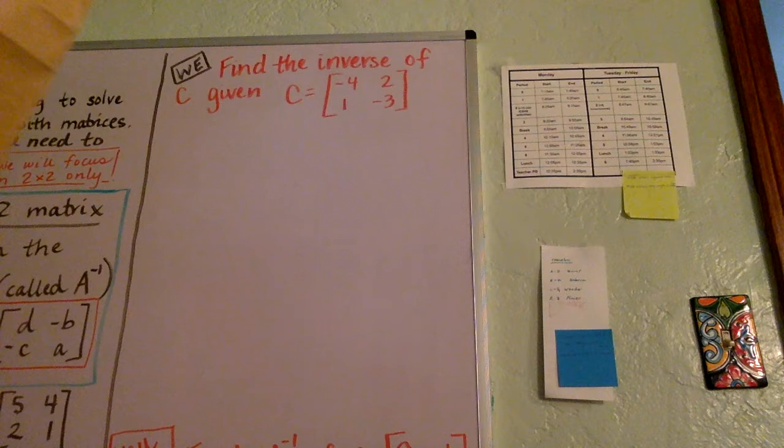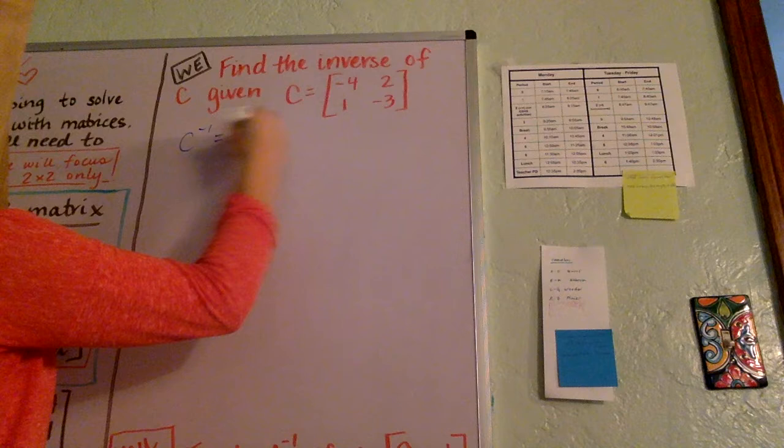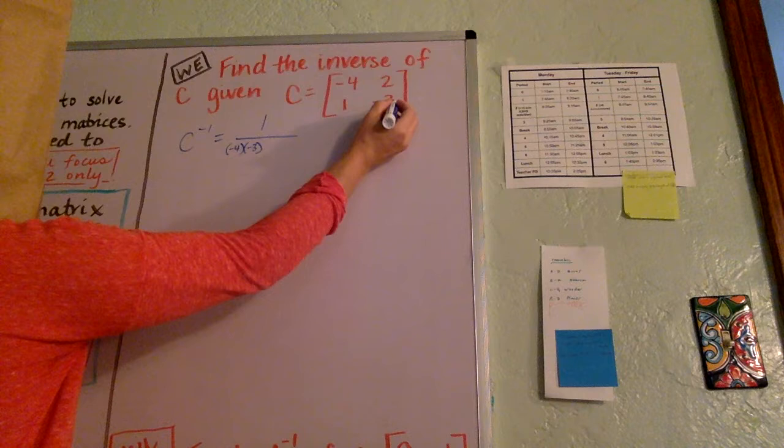So C inverse is going to be 1 over, remember the steps, it's going to be a negative 4 times a negative 3, this times this, minus this times this, 2 times 1.